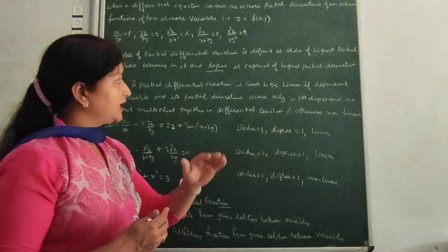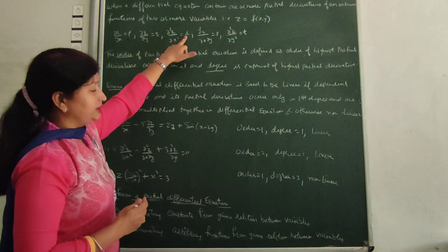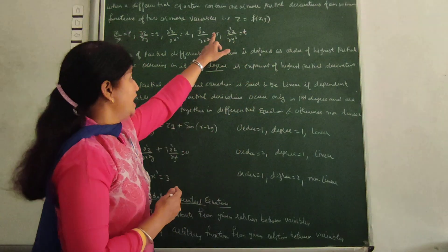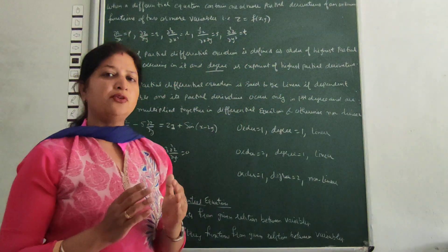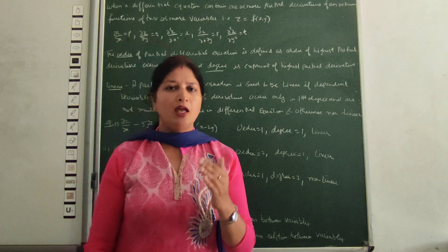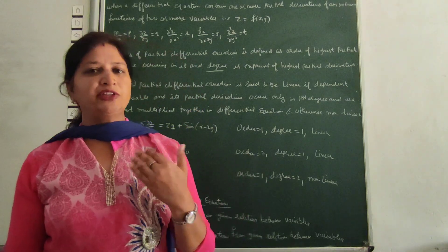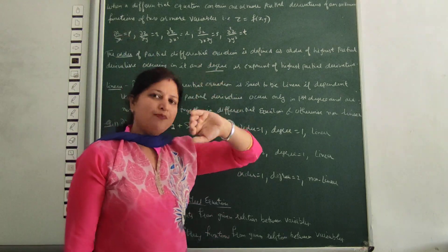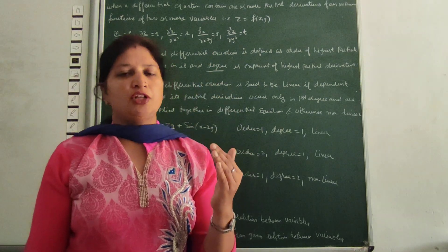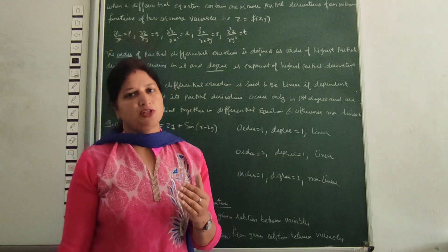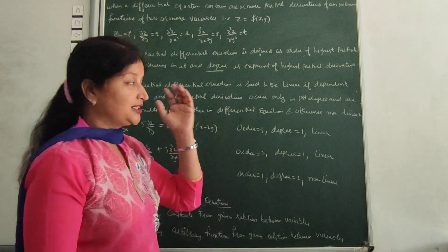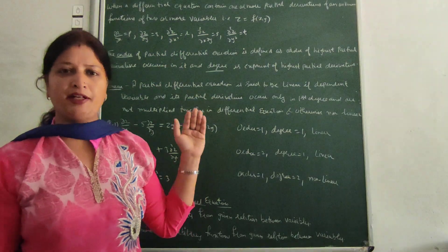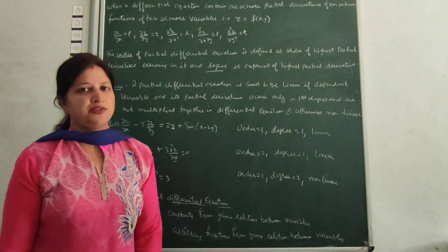When we talk about second order derivatives: derivative with respect to x is r, and with respect to y is t. With respect to x and then y is equal to s. So these standard notations are P, Q, R, S, T — P and Q are first order and R, S, T are second order. We use them directly in partial differential equations.